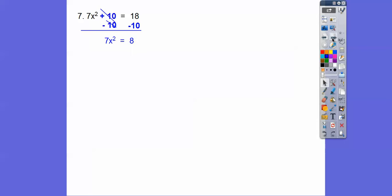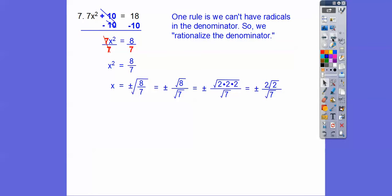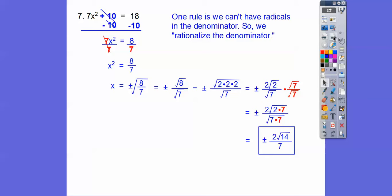Subtract 10 from both sides and divide by 7. Now we do plus or minus the square root — square root of the top and square root of the bottom. Let's simplify that 8: it's 2 times 2 times 2, so a pair of 2's come out. We can't have radicals in the denominator, so we rationalize by multiplying by root 7 over root 7. On top we get 2 root 14, and on the bottom two root 7's give us just 7. So the answer is plus or minus 2 root 14 all over 7.